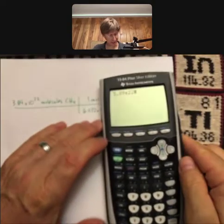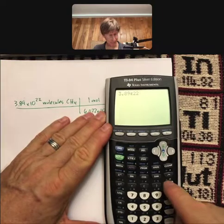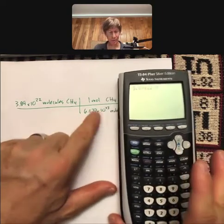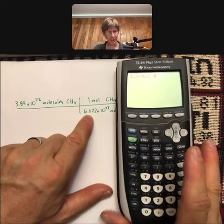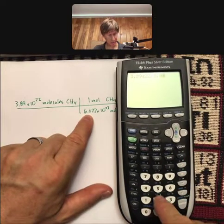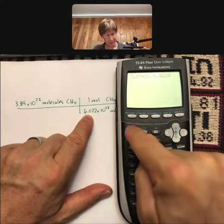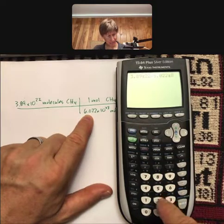Then I'm going to hit the divide by sign and do divided by 6.022 times 10 to the 23rd. That's going to be 6.022 second function EE 23rd.